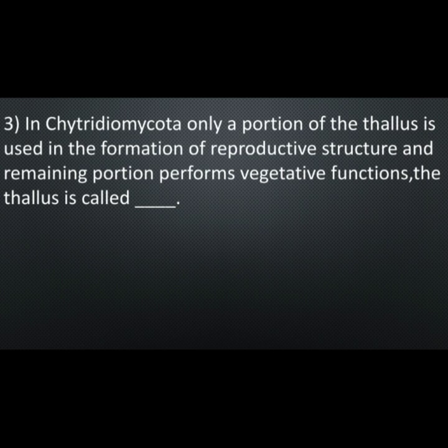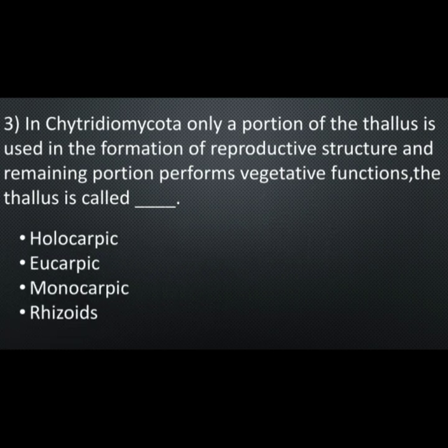Question number three: in Chytridiomycota only a portion of the thallus is used in the formation of a reproductive structure and the remaining portion performs vegetative function. The thallus is called — options are: holocarpic, eucarpic, monocarpic, rhizoid. Correct option is: eucarpic.